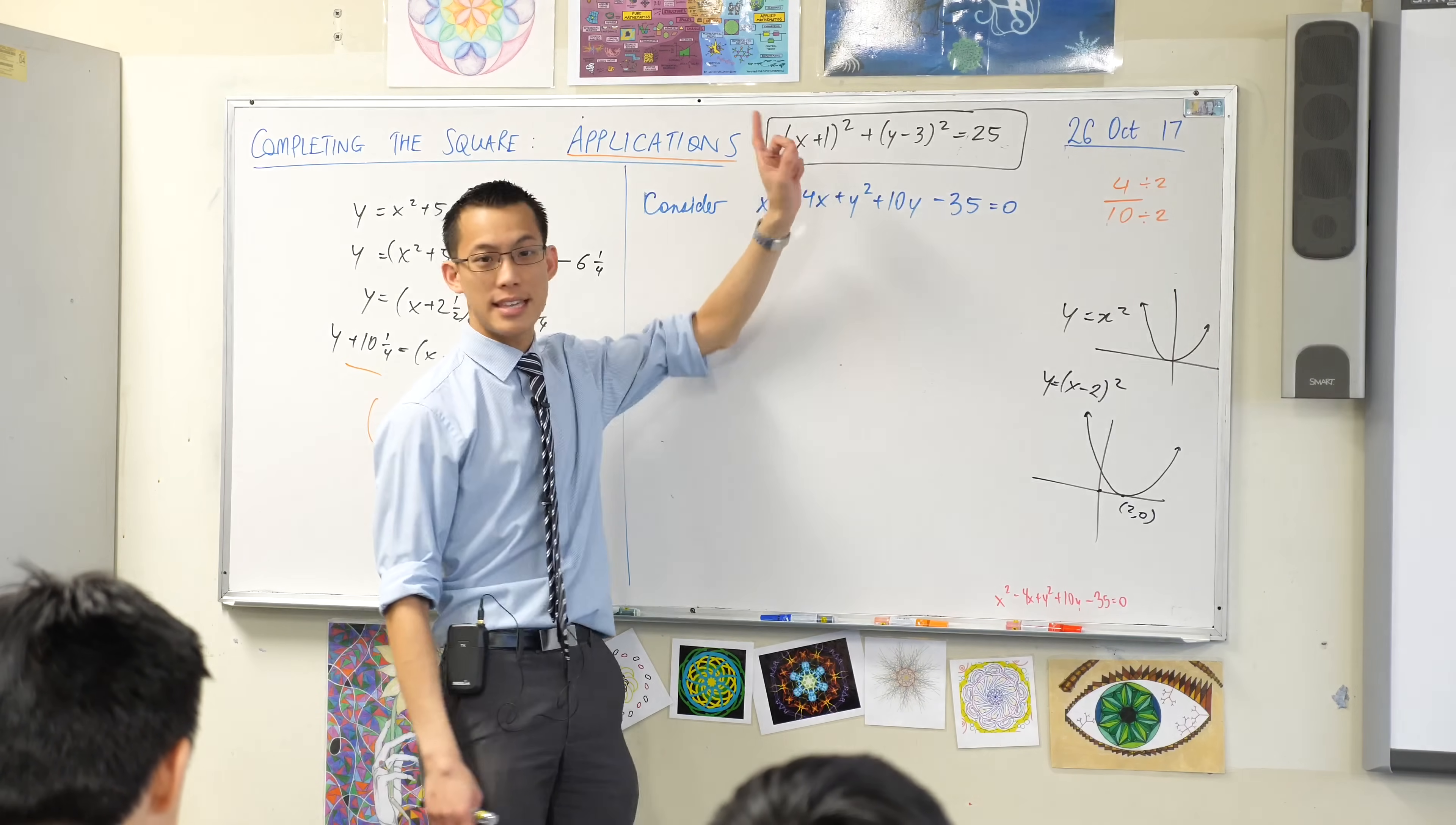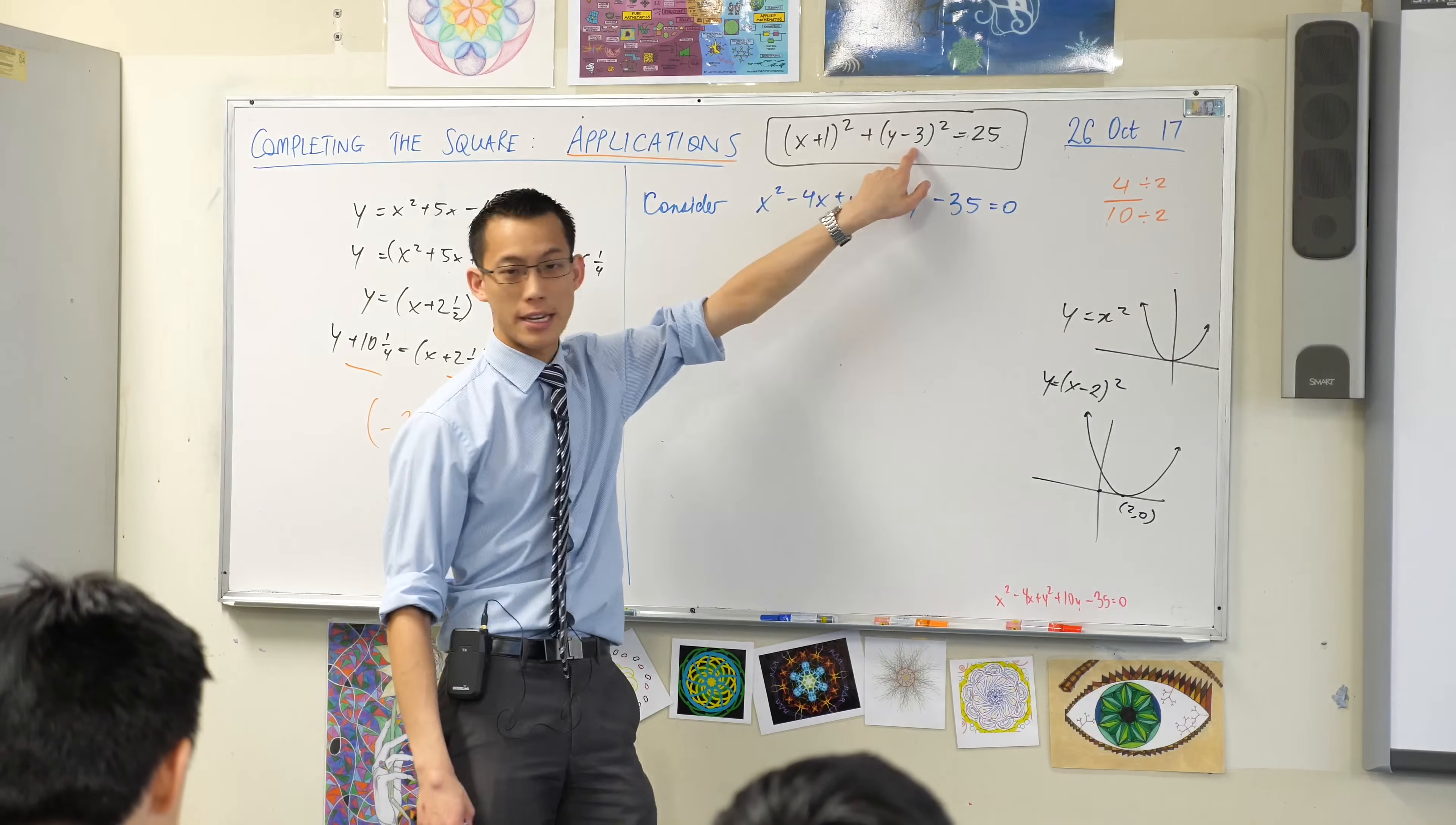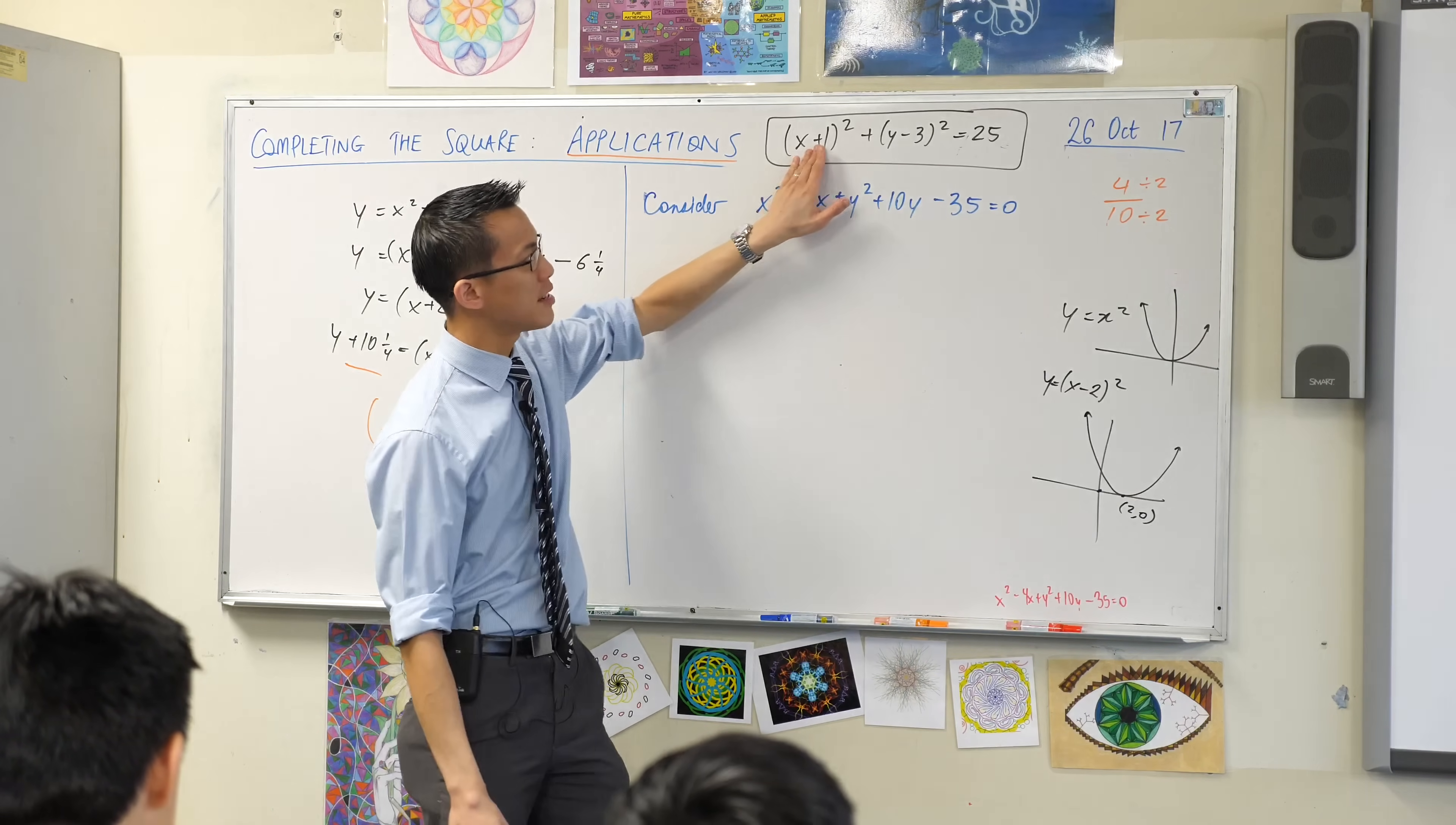You read off the features of this circle in a very similar way to how you read off the features of this parabola. I look and I say the center is going to be at negative 1, 3. You read it in pretty much the identical way, you're swapping the signs around. So you say the center is at negative 1 and 3.